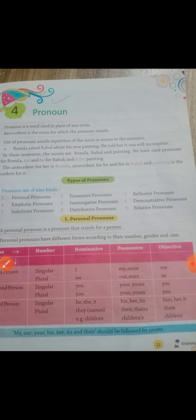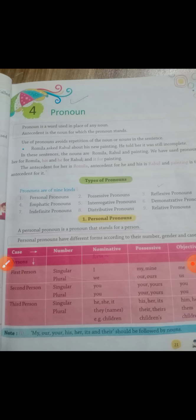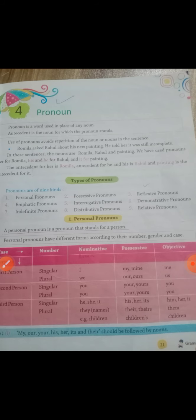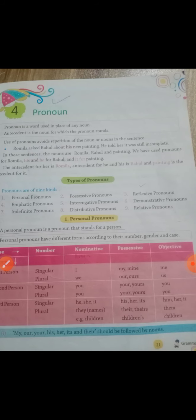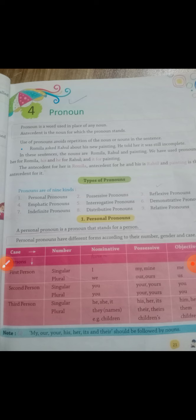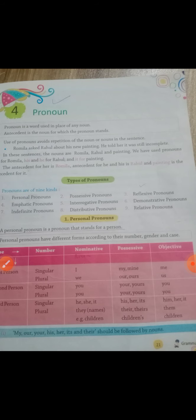Plural first person: nominative our, possessive our, objective us. Second person singular: nominative your, possessive yours, objective you. Second person plural: your, yours, you. Third person singular: he, she, it; possessive his, her, its; objective him, her, it. Third person plural: they; possessive their/theirs; objective them.